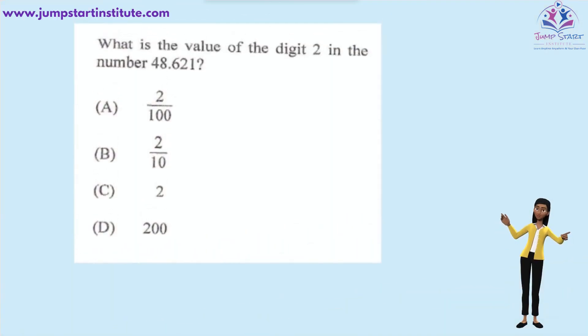What is the value of the digit 2 in the number 48.621? If you look closely at this number, the digit 2 is in the hundredths place. Therefore, the value of the digit 2 is two hundredths. The answer is A.